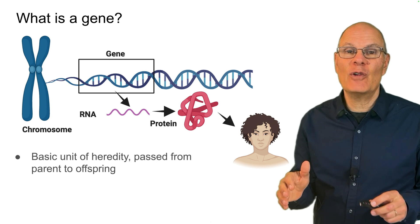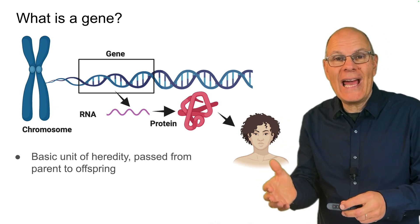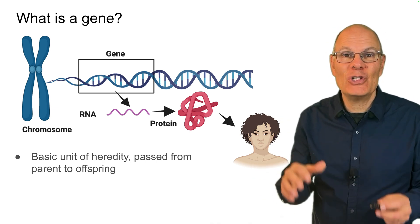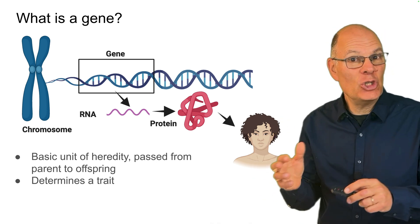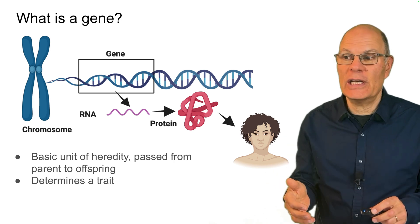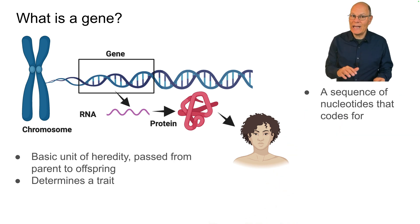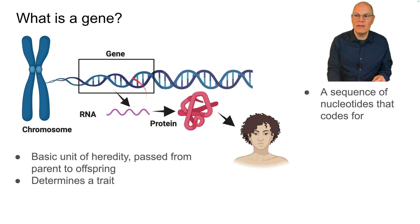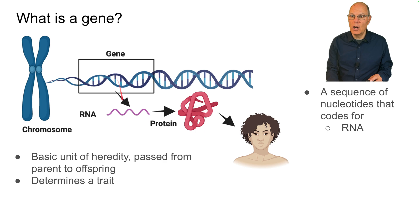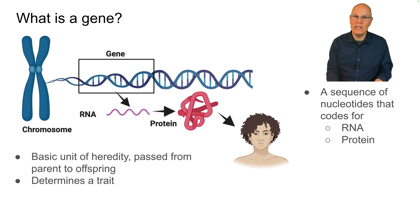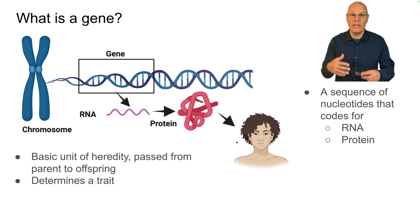Genes are the basic unit of heredity — they are what gets passed from parents to offspring and they determine traits or characteristics. You can also think of genes from a molecular genetics perspective: a sequence of DNA nucleotides that code for RNA, and ultimately code for protein, and those proteins ultimately determine the characteristics of the organism.